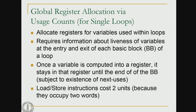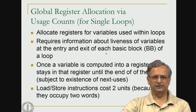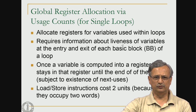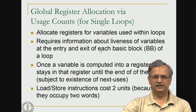Let us look at a simple algorithm for global register allocation. The region here is not a complete function — we will look at loops. We begin with allocation for single loops and then apply the same algorithm for multiple loops. This algorithm requires information about the liveness of variables at the entry and exit of each basic block.